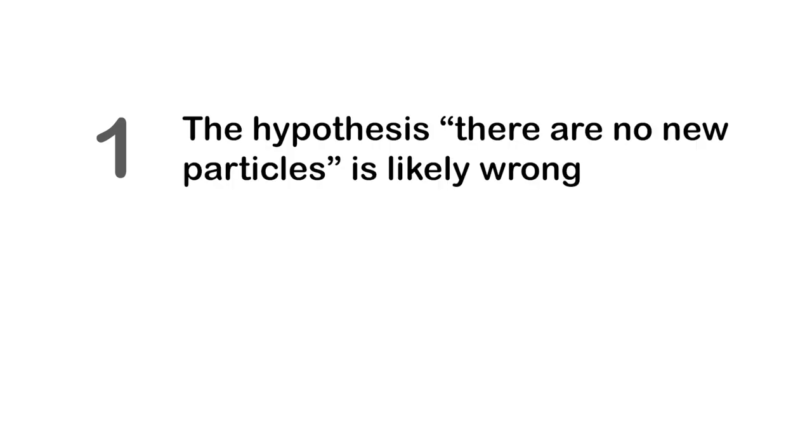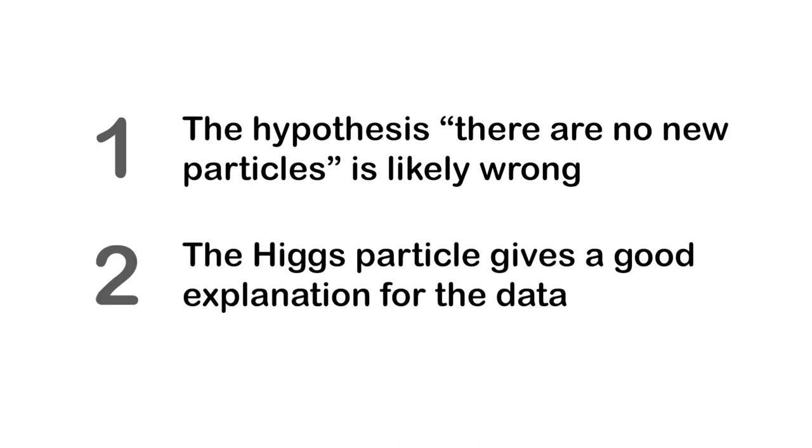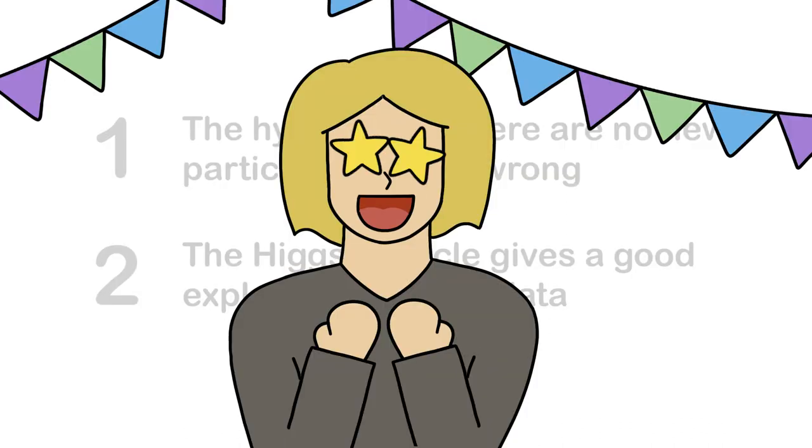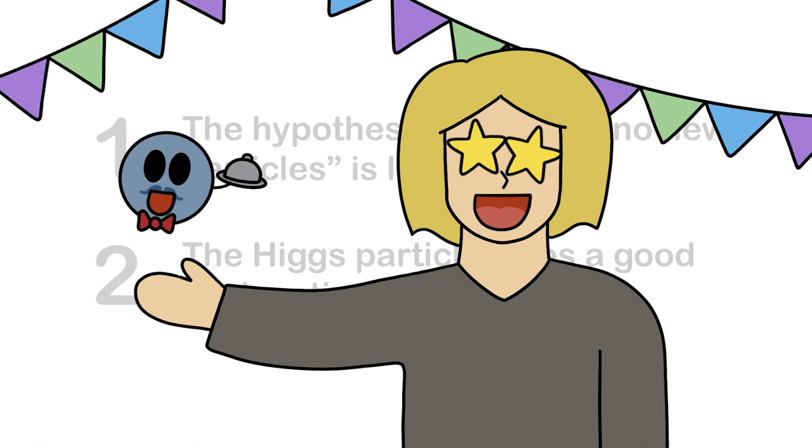One, our hypothesis of there are no new particles is wrong. 1 in 2 million, remember? And two, that the existence of the Higgs particle provides a good explanation for our measurements. Or said a bit simpler, we found a new particle. We found the Higgs.